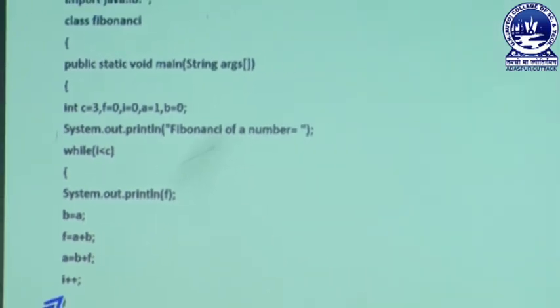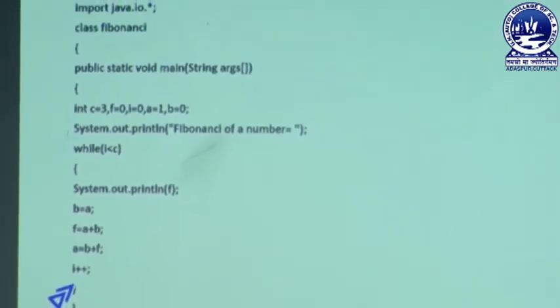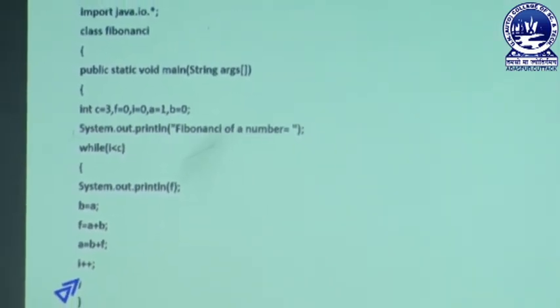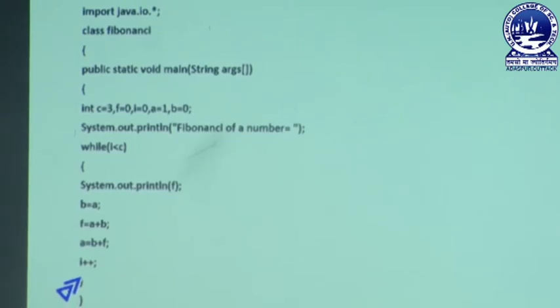In this way, we can print the series: 0, 1, then 1, then 2, then 3. We can execute the while-block statements in our program. The value changes each iteration until we stop the whole execution. It is a simple explanation of the while-loop.